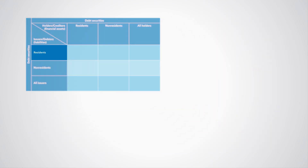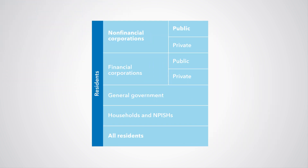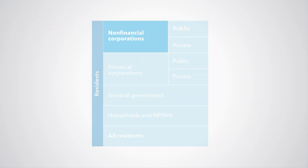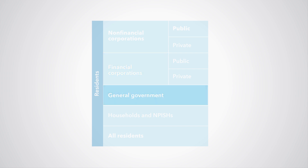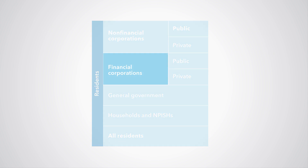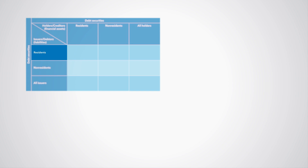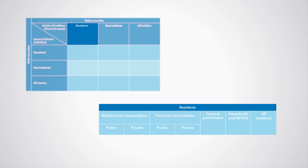We then go one step further and identify the following types of residents of the domestic economy: non-financial corporations, financial corporations, general government, and households and non-profit institutions serving households. In addition, we can also separate financial corporations and non-financial corporations into those that are controlled by the public sector and those controlled by the private sector. We do this breakdown for the issuers as well as the holders.